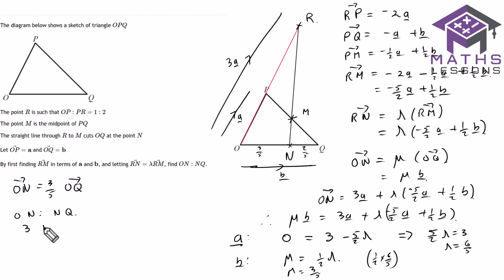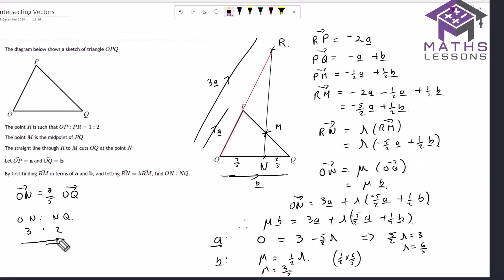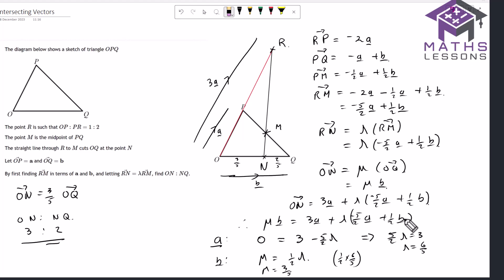So we know ON is 3 fifths of OQ, which means NQ must be 2 fifths — giving us the ratio ON to NQ of 3 to 2. We found that ON is 3 fifths of the full distance OQ. We can also check this by putting lambda back in: a half times 6 over 5 gives us 3 fifths of b, confirming the result.